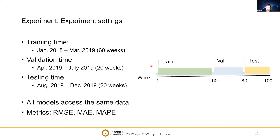For our experiment settings, we train our model on 60 weeks of data, use 20 weeks for validation, and the last 20 weeks for testing. All baseline models can access the same data. For baseline models, we simply concatenate the real-time data and the updated data as input to the model. We use RMSE, MAE, and MAP to evaluate our model.